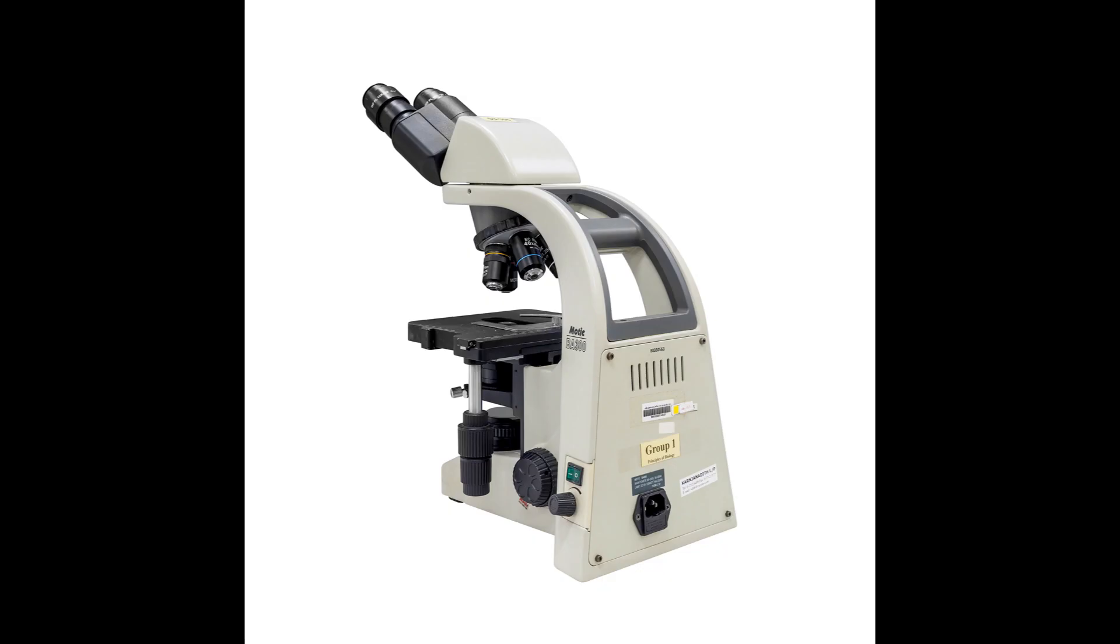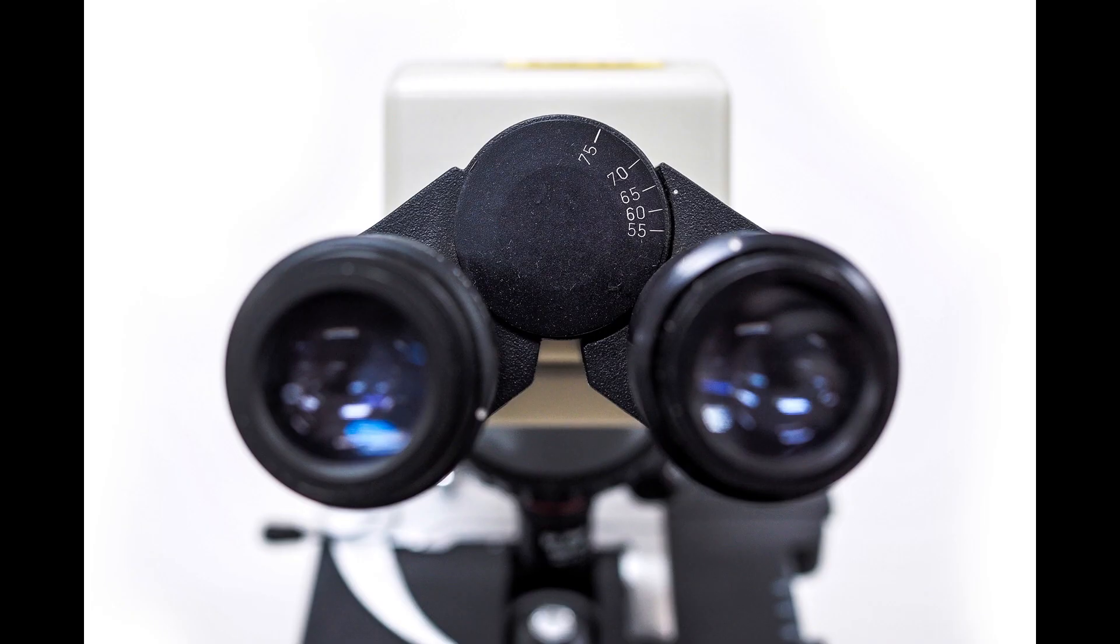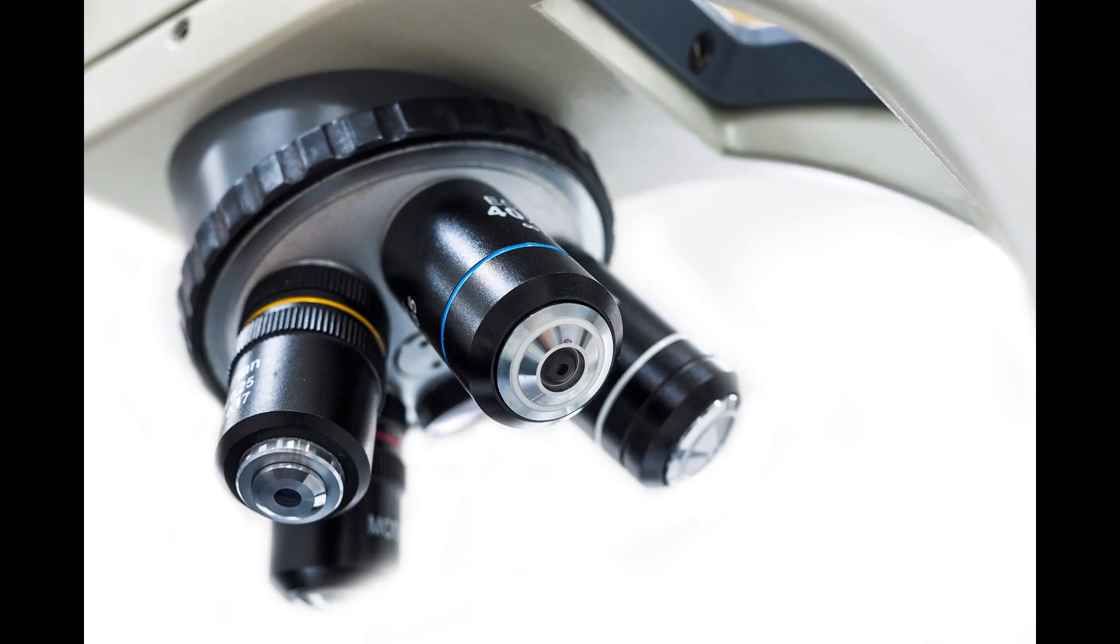The imaging system improves resolution and magnifies the image. It consists of the objective and the eyepiece, or another word, the ocular lenses. The objectives are four lenses mounted on a revolving nose piece. Each objective magnifies the image.